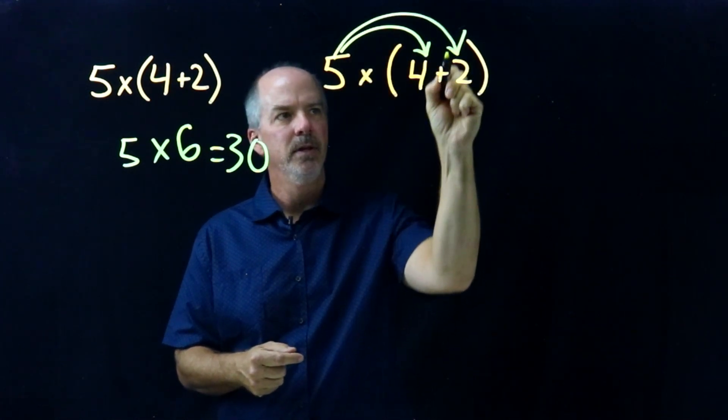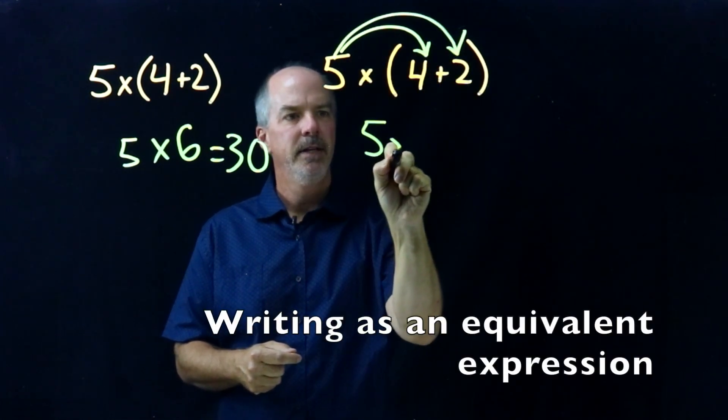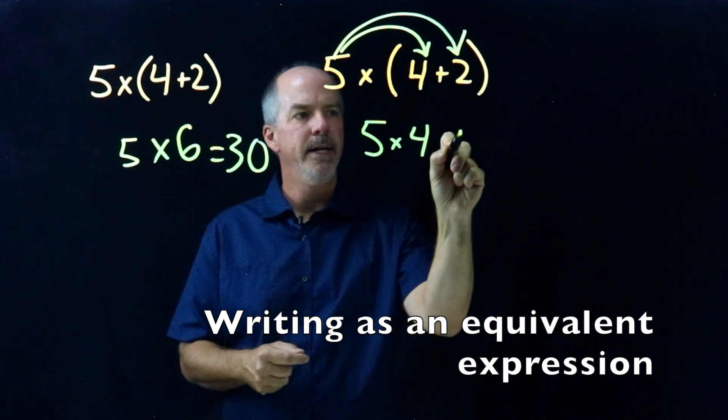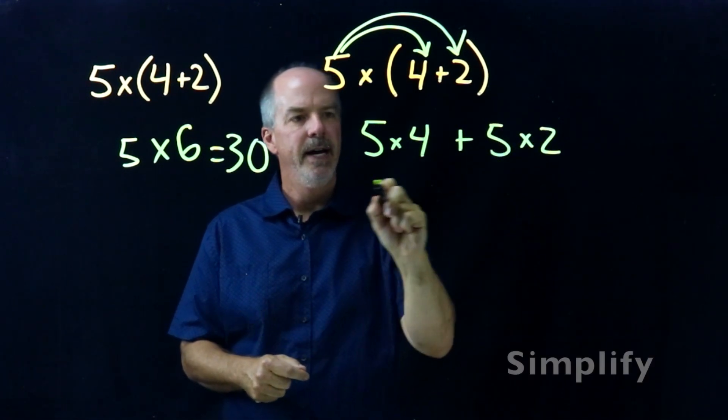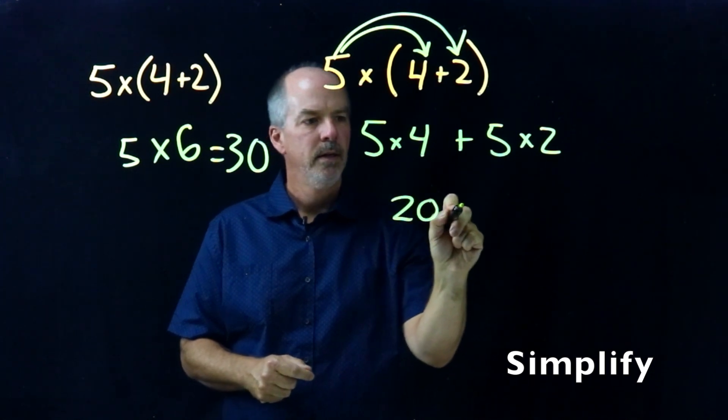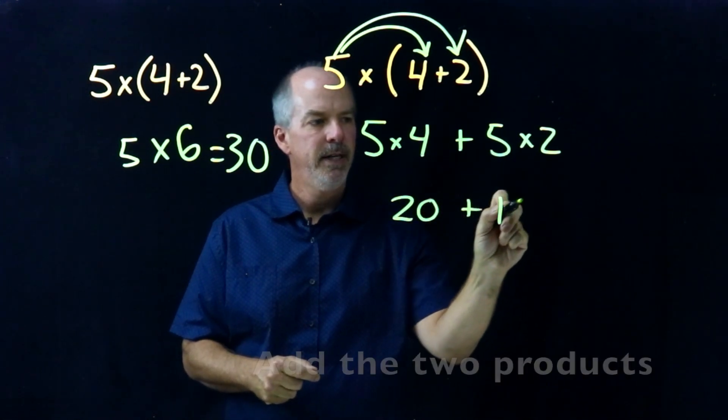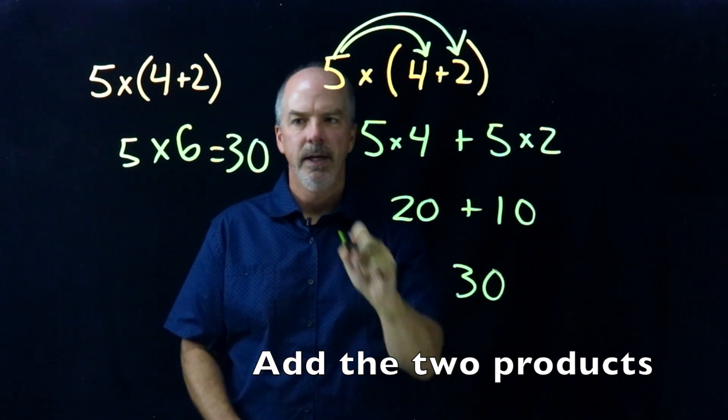and five times two. So that would be five times four plus five times two. Five times four is twenty, plus five times two is ten, and thirty again.